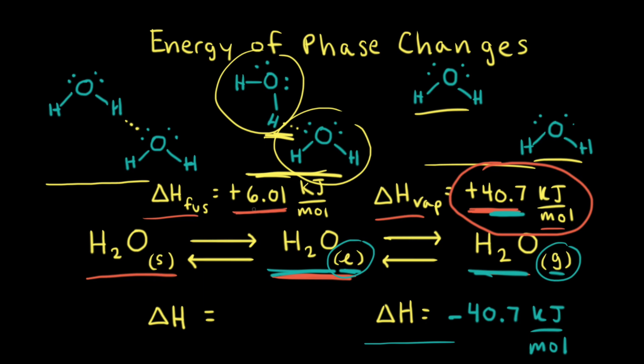And if it takes positive 6.01 kilojoules per mole to go from the solid state to the liquid state, if we go in reverse from the liquid state back to the solid state, we would give off 6.01 kilojoules per mole of energy. And so we need to write in a negative sign here to indicate the energy is given off. When we go from a liquid to a solid, that's freezing. So this value is called the heat of freezing for water.